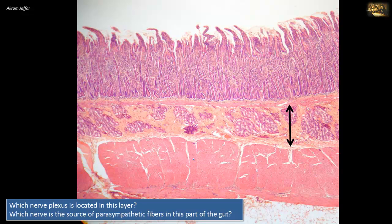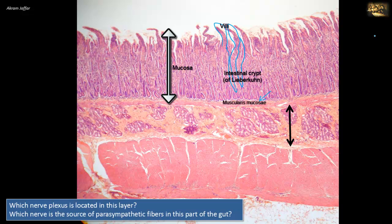First of all, let's identify the section. The section shows features of the small intestine, where the mucosal surface is made up of numerous finger-like projections — the villi — a characteristic feature of the small intestine. The mucosa in between the villi is formed into crypts. The deeper part of the mucosa is the muscularis mucosa, and the next layer deep to the mucosa is the submucosa, extending between the muscularis mucosa and the muscularis externa. In this part of the gut, the submucosa contains mucus-secreting glands — the Brunner's glands — the characteristic feature of the duodenum. So this section belongs to the duodenum.